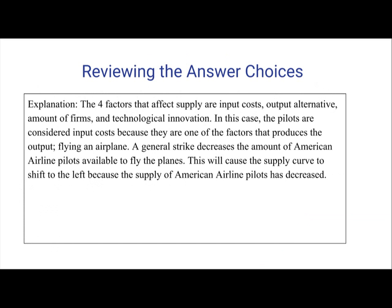The four factors that affect supply are input costs, output alternatives, amount of firms, and technological innovation. In this case the pilots are considered input costs because they are one of the factors that produces the output, which is flying an airplane. A general strike decreases the amount of American airline pilots available to fly the planes, and with a lack of professionals there is a decrease in supply.